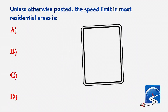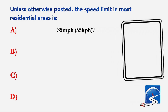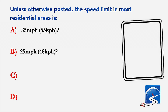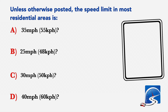Unless otherwise posted, the speed limit in most residential areas is: A: 35 miles per hour. B: 25 miles per hour. C: 30 miles per hour. D: 40 miles per hour. The correct answer is B: 25 miles per hour.